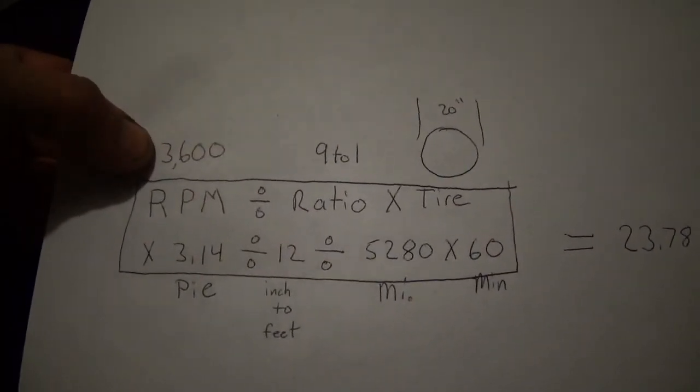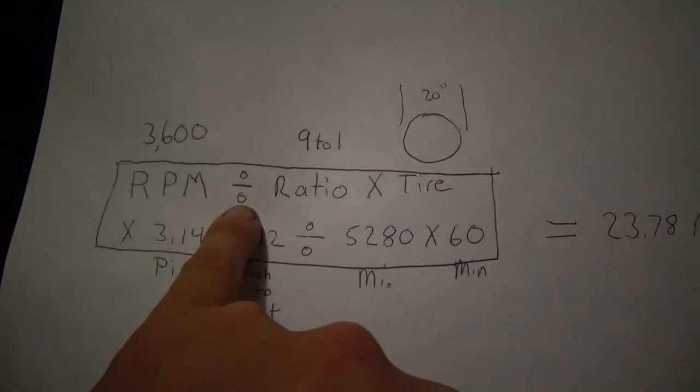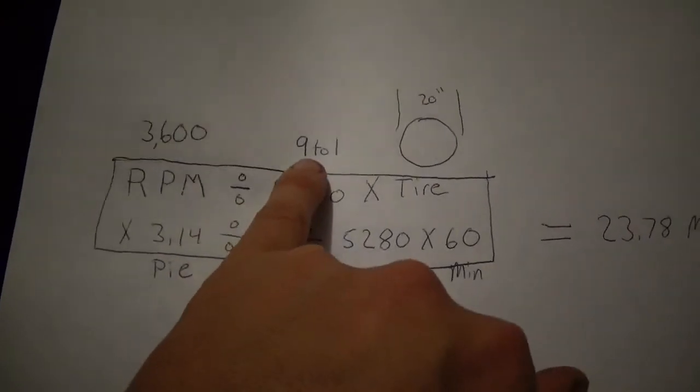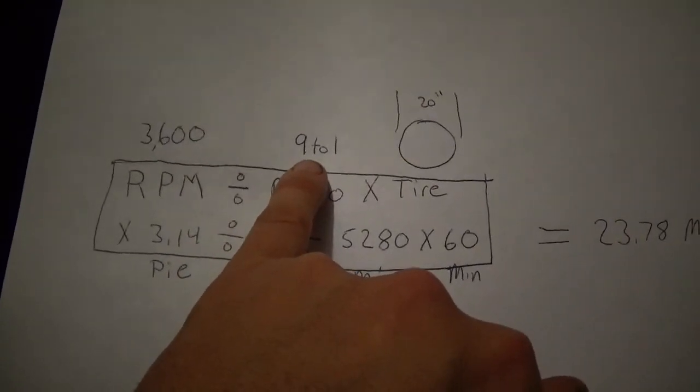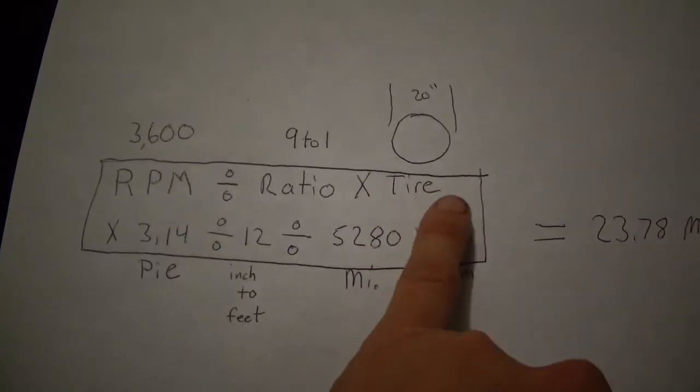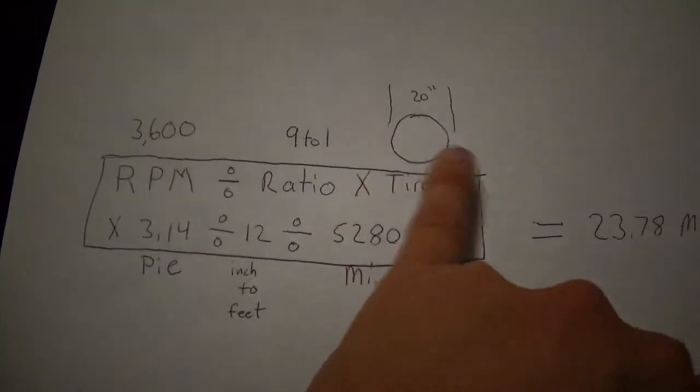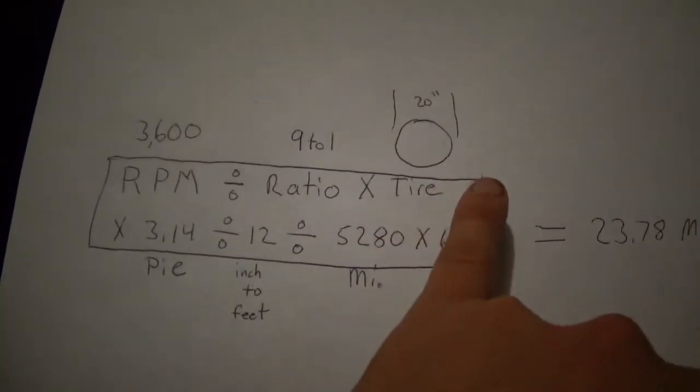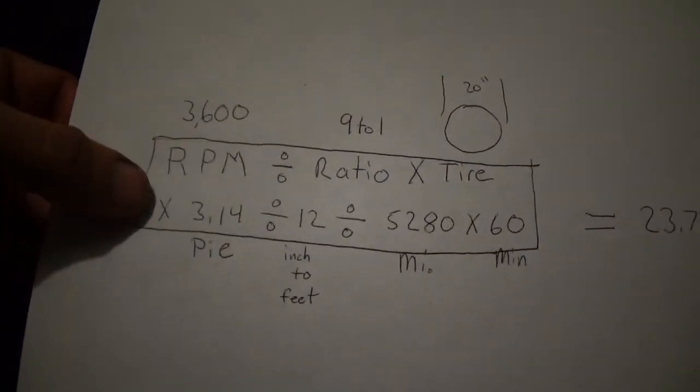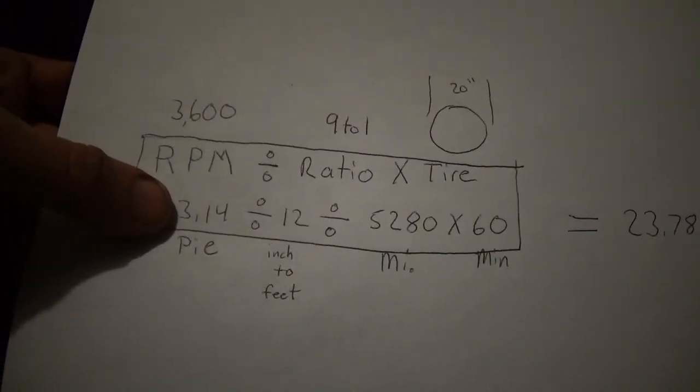We're just going to say the engine's running at 3600 RPM. You now divide that by your gear ratio, 9 to 1, and you times it by your tire size. You measure it on the outside of your tire, times it by 3.1, which is pi.